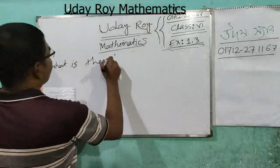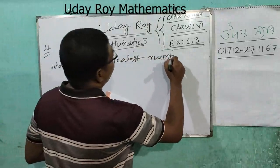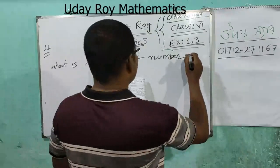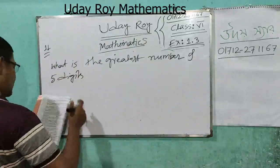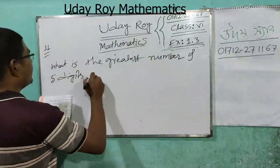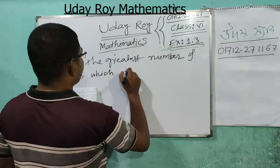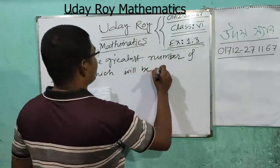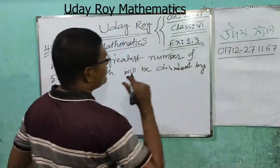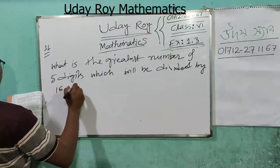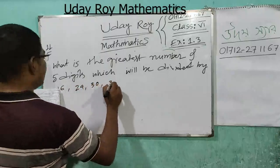What is the greatest number of 5 digits which shall be divisible by 16, 24, 30, and 36, with remainder 10 in each case? Be careful — it is a greatest number of 5 digits.